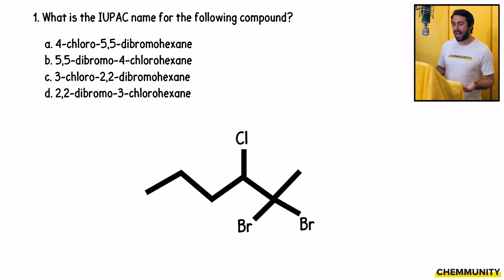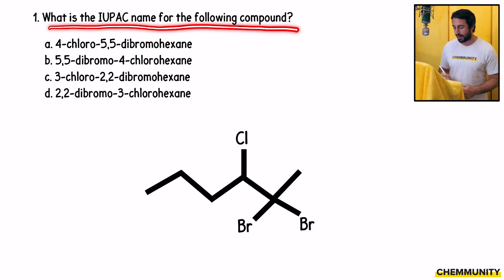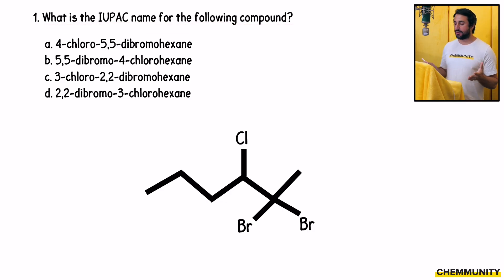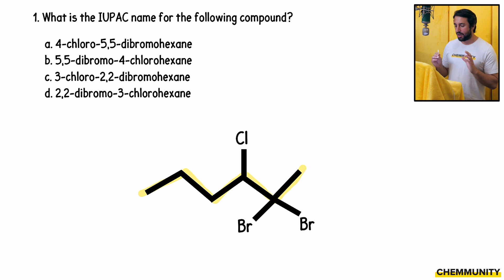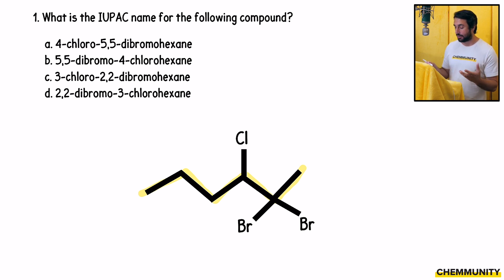Number one asks: what is the IUPAC name for the following compound? The first step always is to find the parent chain — we need to find that main carbon chain. This one's very easy; there's only one. And then we want to number this carbon chain.